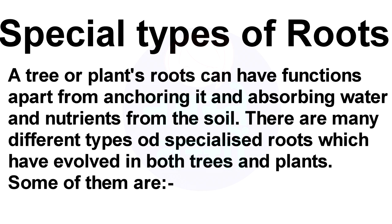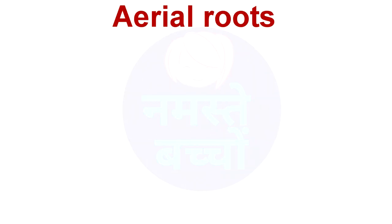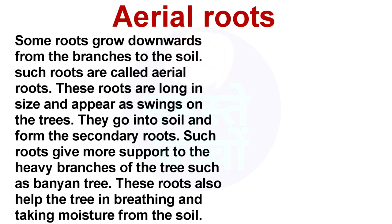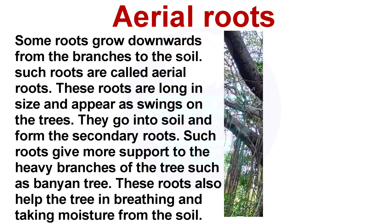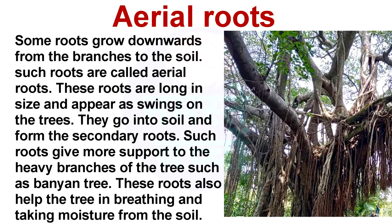Some of them are aerial roots. Some roots grow downwards from the branches to the soil; such roots are called aerial roots. These roots are long in size and appear as swings on the tree. They go into the soil and form secondary roots. Such roots give more support to the heavy branches of the tree, such as the banyan tree.